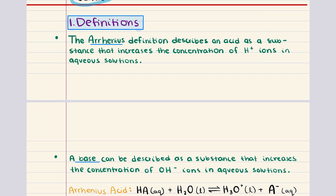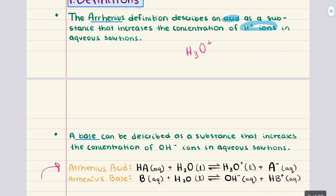Over the past century, chemists have developed three definitions to classify compounds as acids or as bases, and each subsequent definition has become more inclusive than the previous one. We're going to start with the Arrhenius definition. An Arrhenius acid is a compound that, when added to water, dissociates to produce hydrogen ions. These hydrogen ions often associate with water molecules to form hydronium ions, H3O+. Here we see the general equation: HA represents the Arrhenius acid, which dissociates in water to yield hydronium ions and A-minus, where A-minus is the conjugate base of the acid.